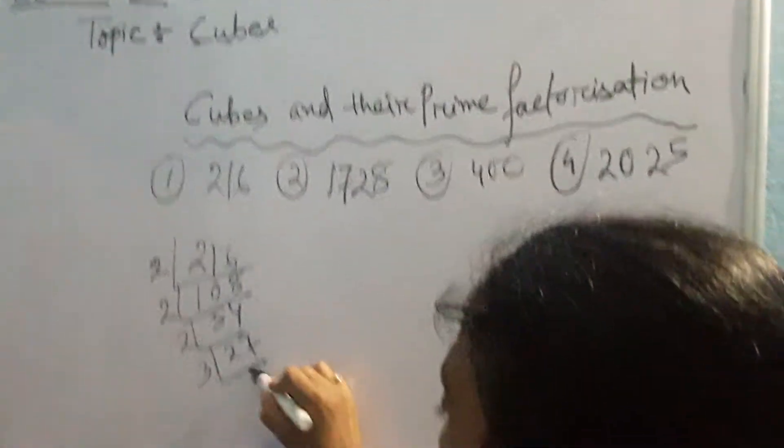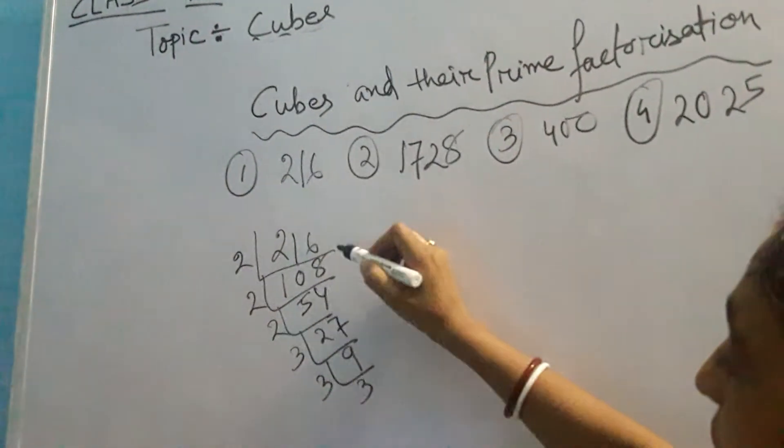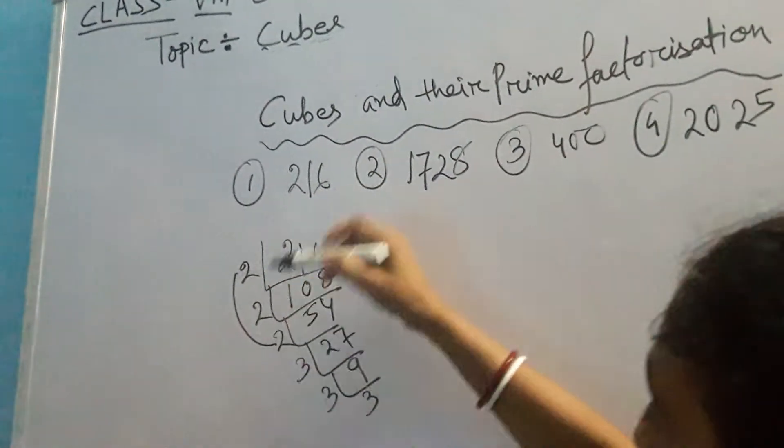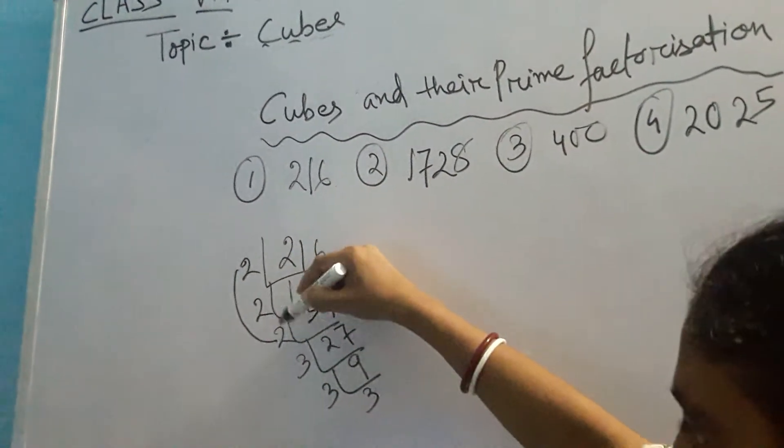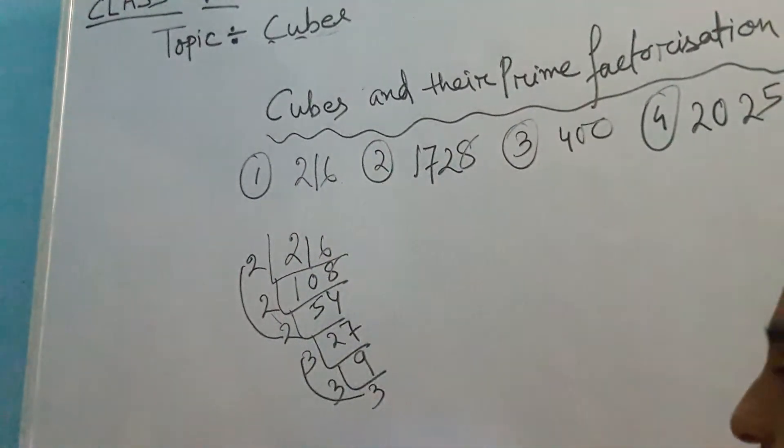Now it is divisible by 3. I am getting 9, again 3. I am getting 3. So when I am writing the factors of this one, what am I getting? I am getting a group of 2 numbers for 3 times and 3 for 3 times.